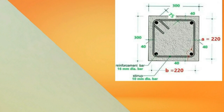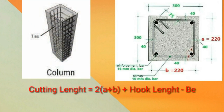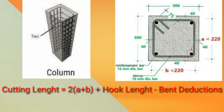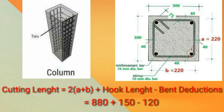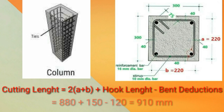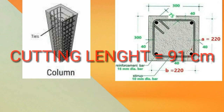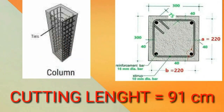Going back to the formula: cutting length is equal to 2 times (a plus b) plus hook length minus bend deduction, which is equal to 880 plus 150 minus 120, and is equal to 910 millimeter. Therefore the final cutting length of our lateral ties is 91 centimeter.